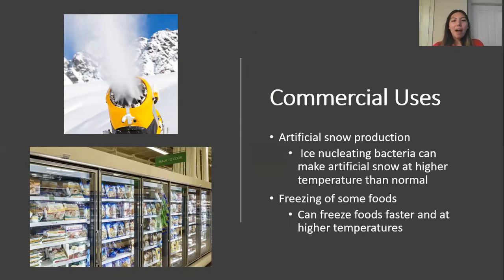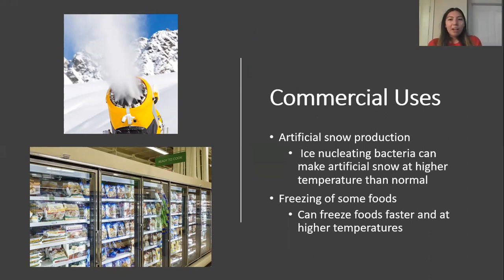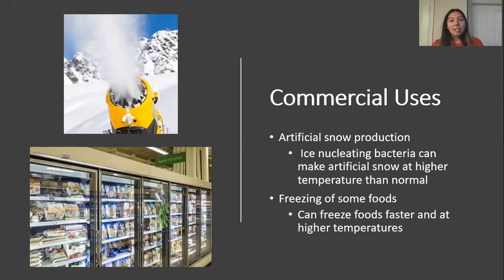Now let's talk about how these bacteria can be used economically. A lot of ski resorts use artificial snow, and these bacteria can make artificial snow at a higher temperature than normal. These bacteria can also help in the freezing of some foods.